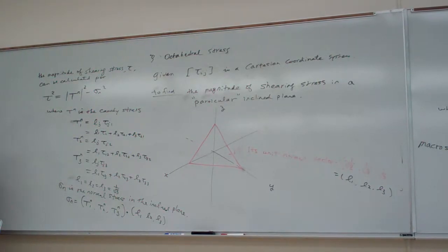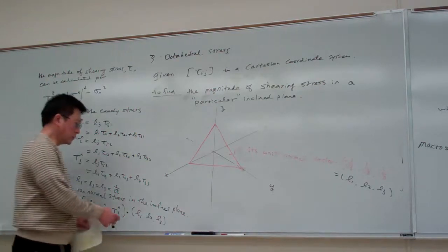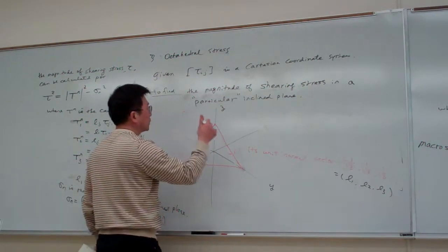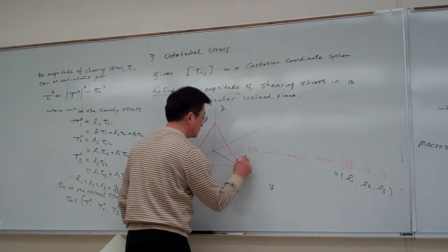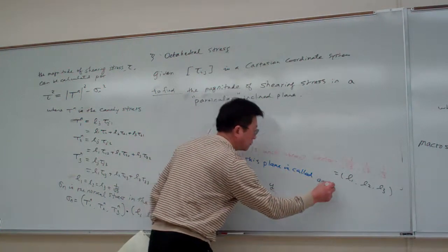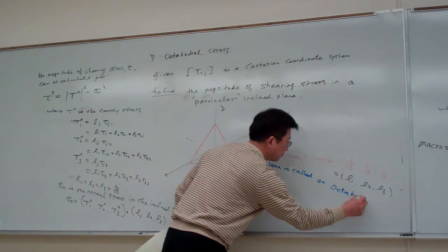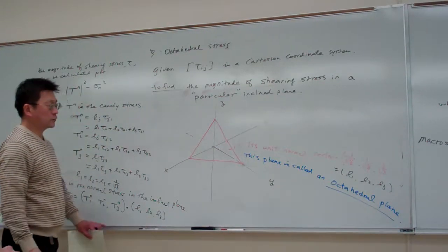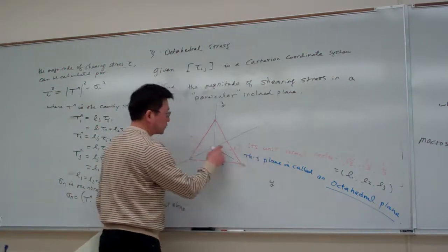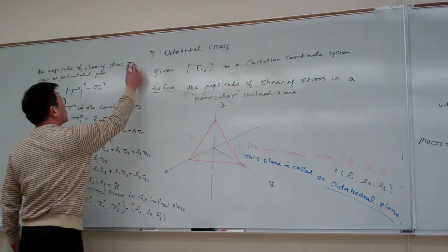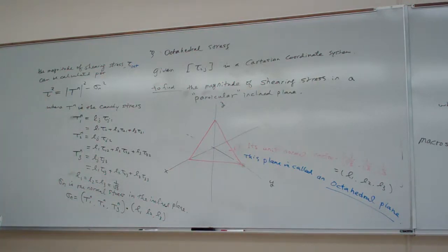τ is the shear stress in this particular plane. This plane is called the octahedral plane — that is simply the name given by people. One octahedral plane is defined such that its normal stress component is in this way.